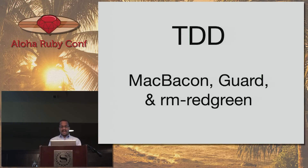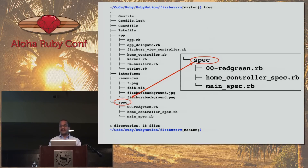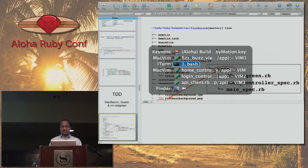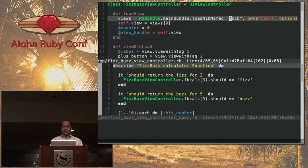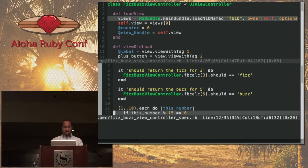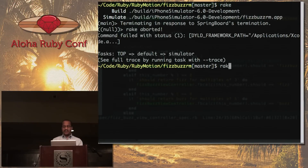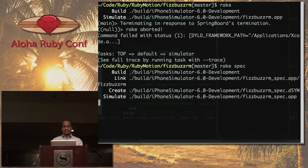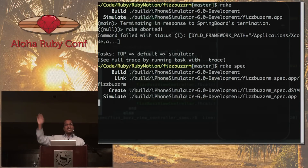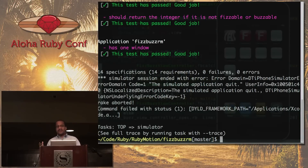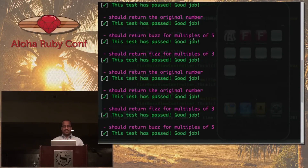The FizzBuzz demonstration I also use to demonstrate TDD. Your specs for TDD go in the spec directory. This is FizzBuzzViewController_spec.rb — the specs look just like RSpec. If you want to run this, you do 'rake spec'; it compiles and runs the specs. You can use guard with this as well, so if you want to do red, green, refactor, you can. Guard watches your files and any time a file changes it goes in and runs your tests again.